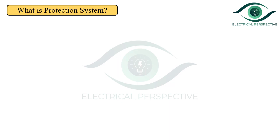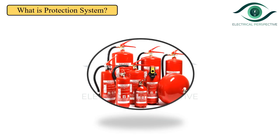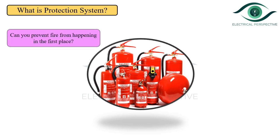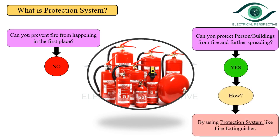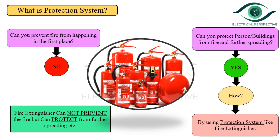To have a better understanding of this concept, let us consider another example. Can you prevent the fire from happening in the first place? The answer is obviously no. For example, if there is a fire due to a short circuit, you cannot prevent it from happening in the first place. But can you protect the person or the buildings from the fire and its further spreading? The answer is yes — by using the protection system like a fire extinguisher. The conclusion is that the fire extinguisher, used as a protection system, cannot prevent the fire from happening in the first place, but can protect against its further spreading and can protect the building and persons from the fire.